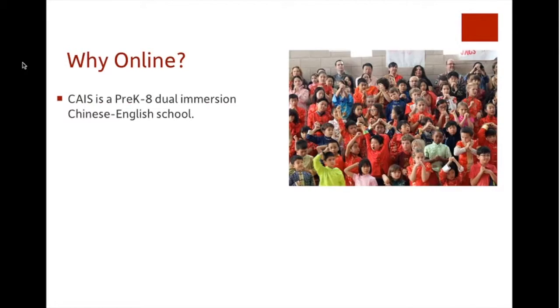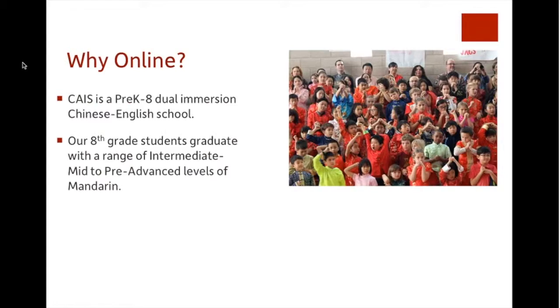So first of all, why an online class? A little bit of background about CASE. CASE is a pre-K through eighth grade dual immersion Chinese-English school. When our students graduate in eighth grade, they've been studying Chinese for nine or more years, and they generally leave with a minimum of an intermediate-mid, and some at pre-advanced, and even last year there were a couple students who tested OPIs and reached advanced-mid levels. So they can do quite a lot with the language.